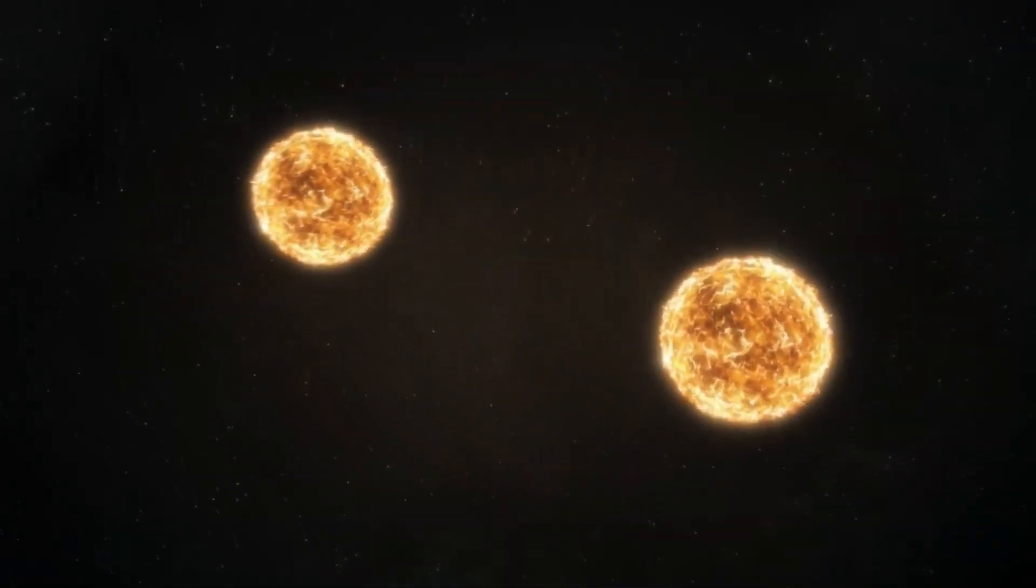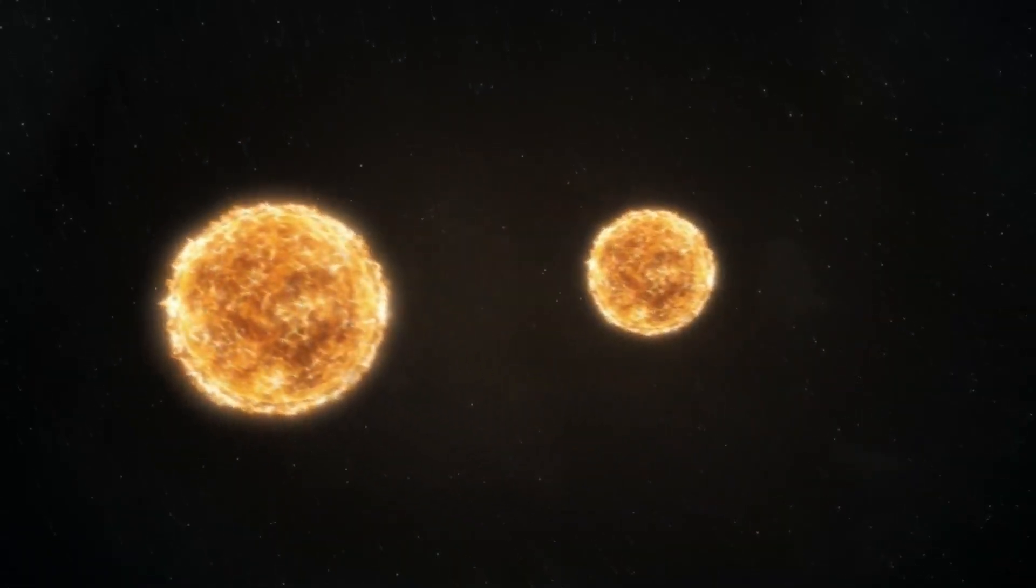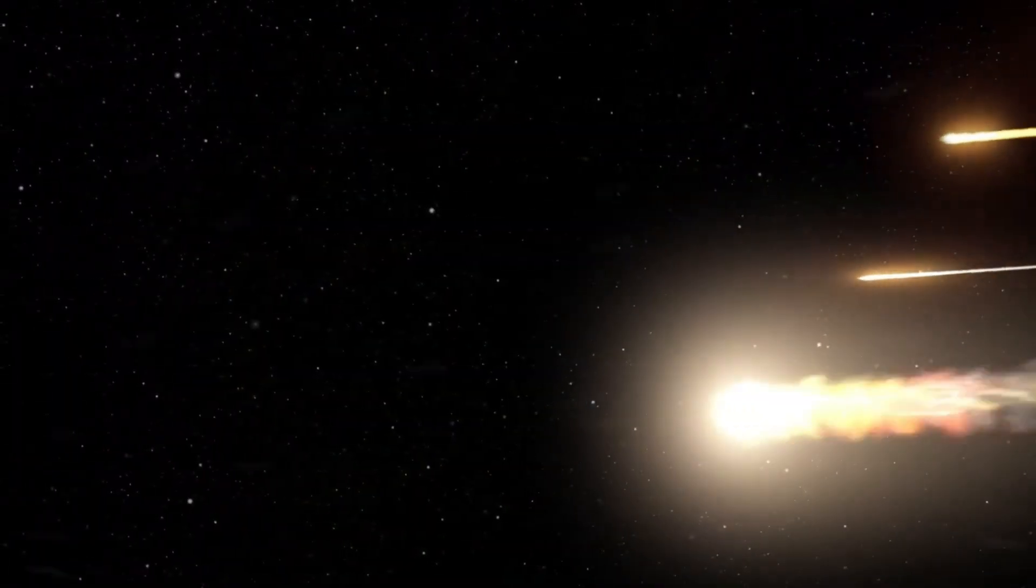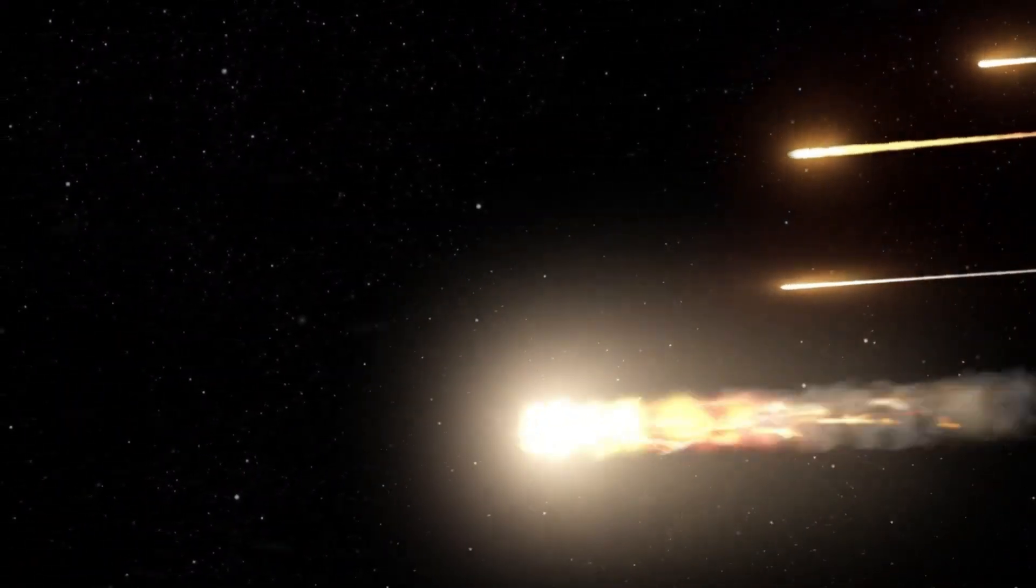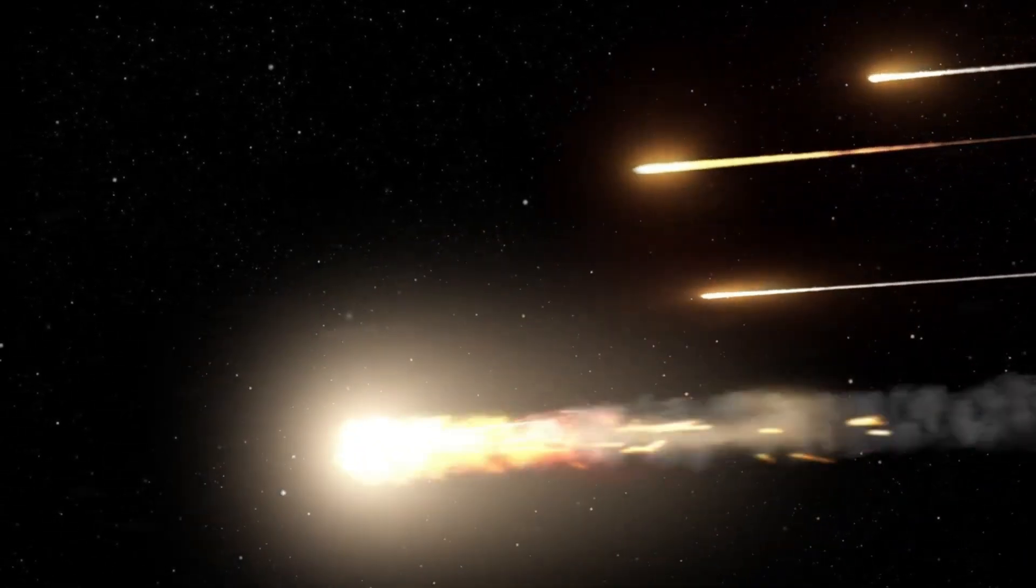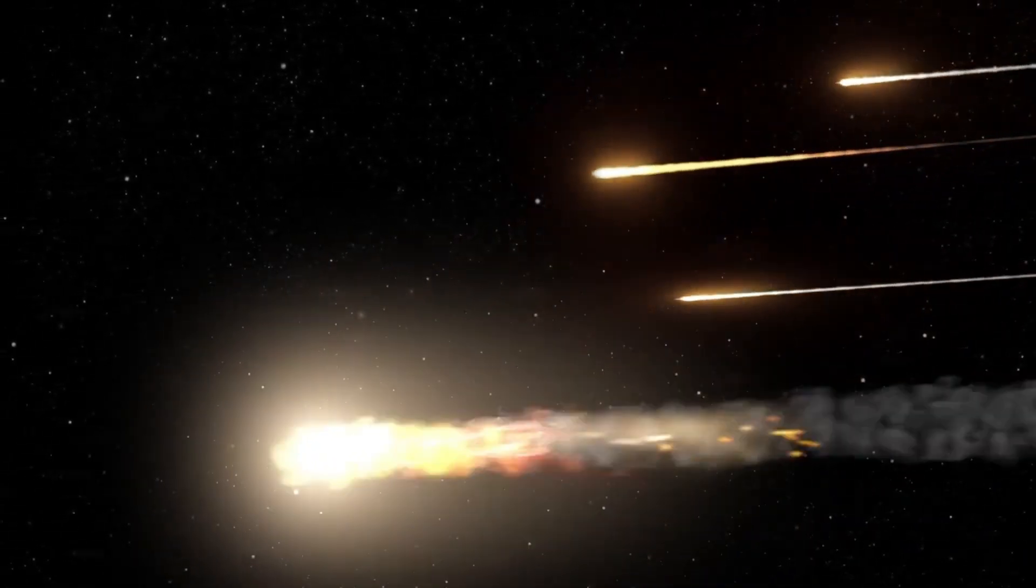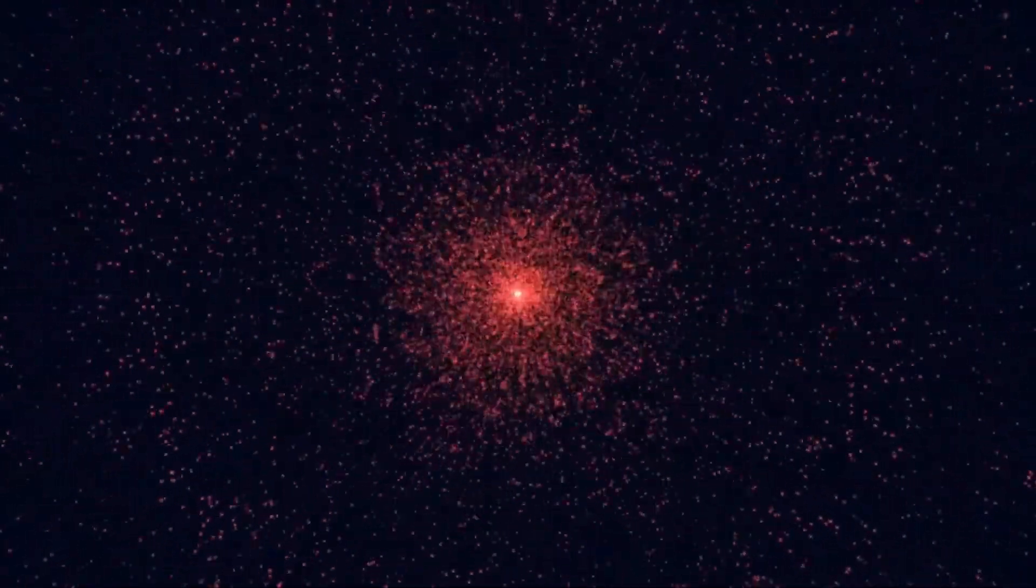The red supergiant phase. Betelgeuse is at the very end of its life cycle, in a phase known as the red supergiant phase where it is expanding and cooling after billions of years spent fusing hydrogen into helium in its core. Estimated to be around 8 to 8.5 million years old, it may seem young by human standards, but in stellar terms, it is ancient. Stars like Betelgeuse have short lifespans compared to smaller stars like our sun, and its current phase represents the final stages of its existence.